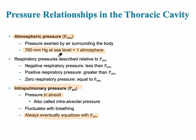What happens is this pressure always equalizes with the atmospheric pressure, 760 millimeters of mercury. Basically, the intrapulmonary pressure is equal to the atmospheric pressure at one point, and then greater than the intrapleural pressure at one point. This drives the air in and out of the lungs during inspiration and expiration.